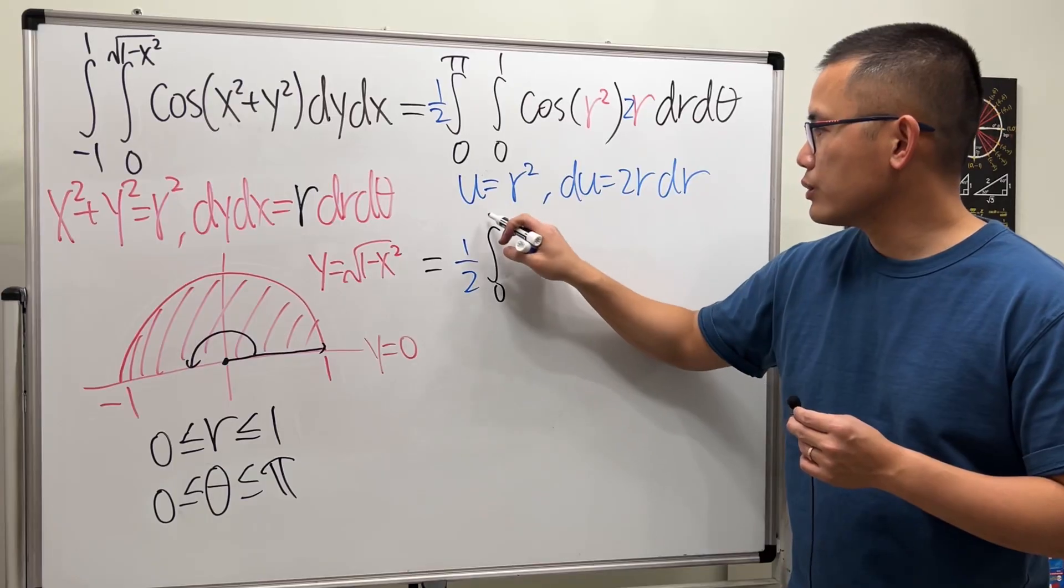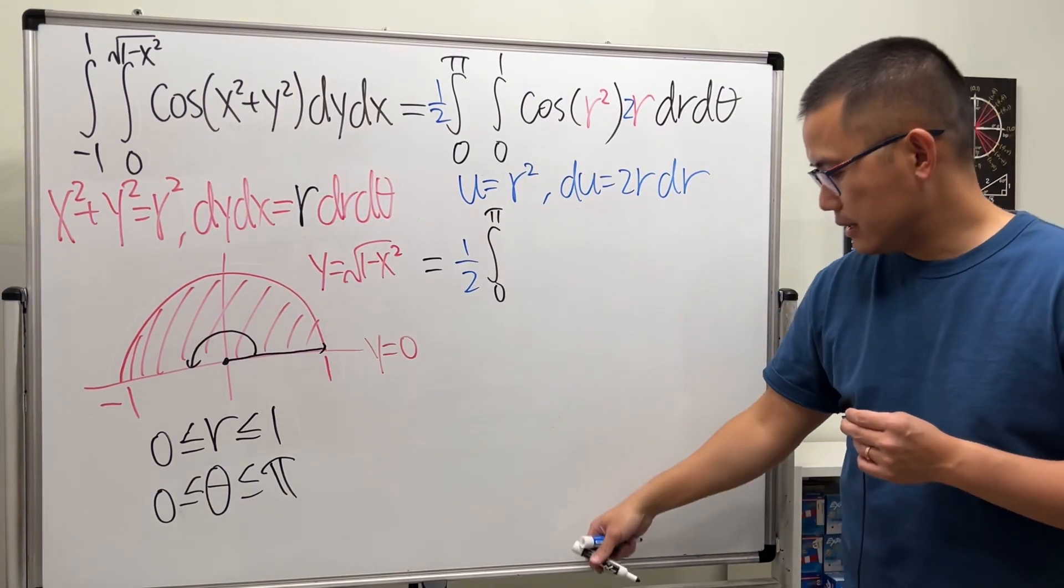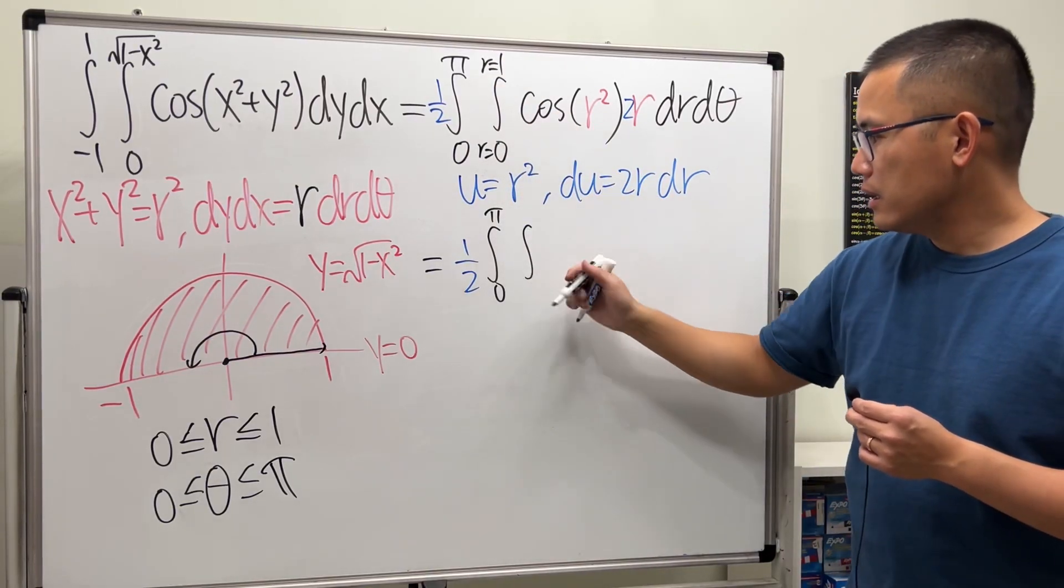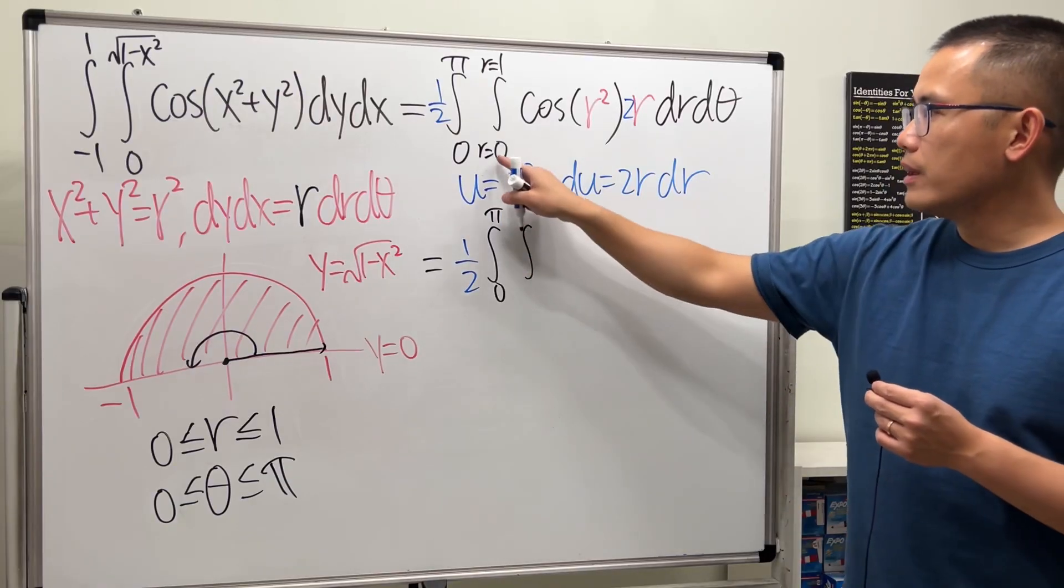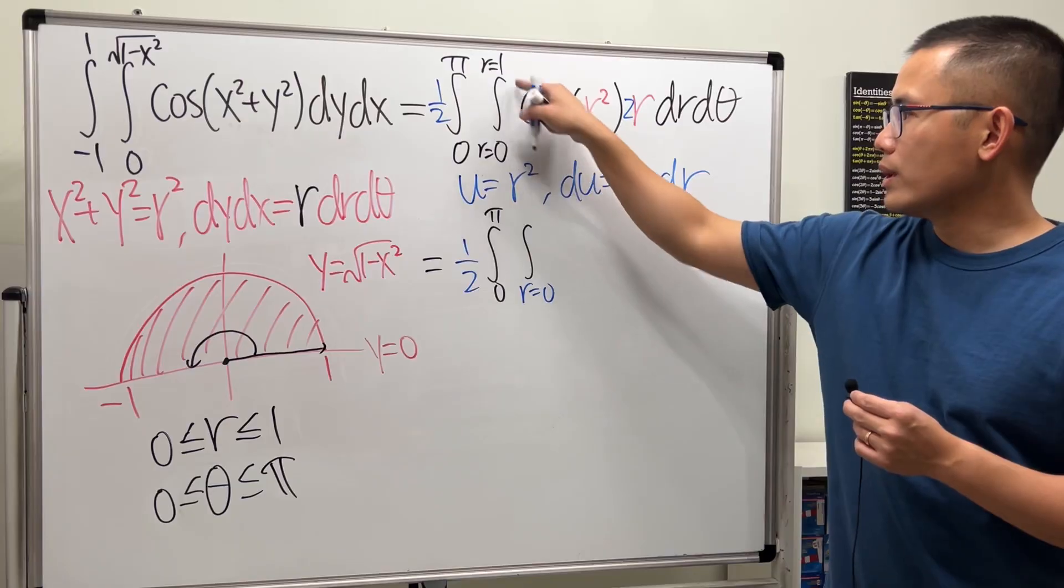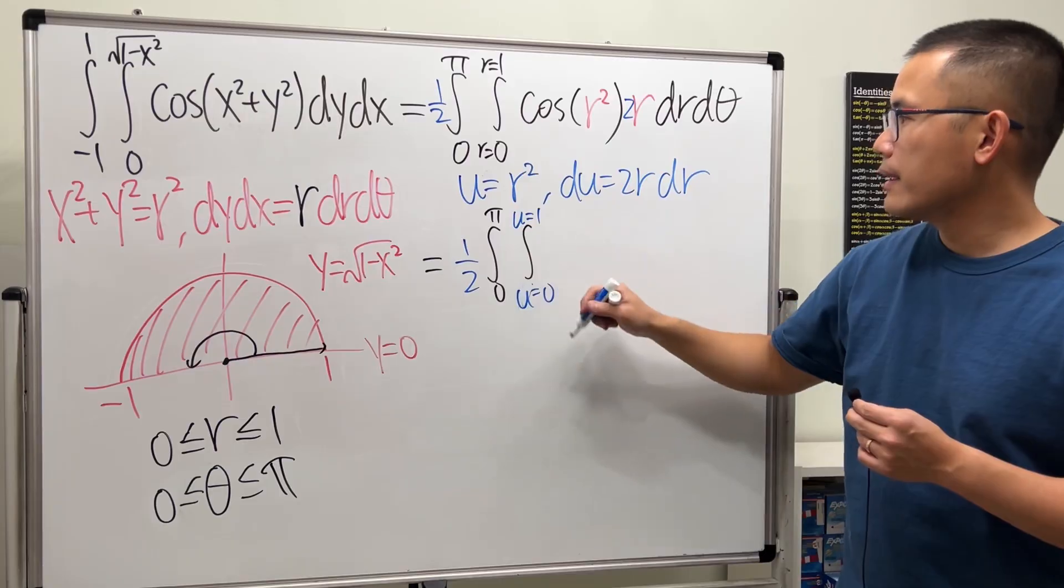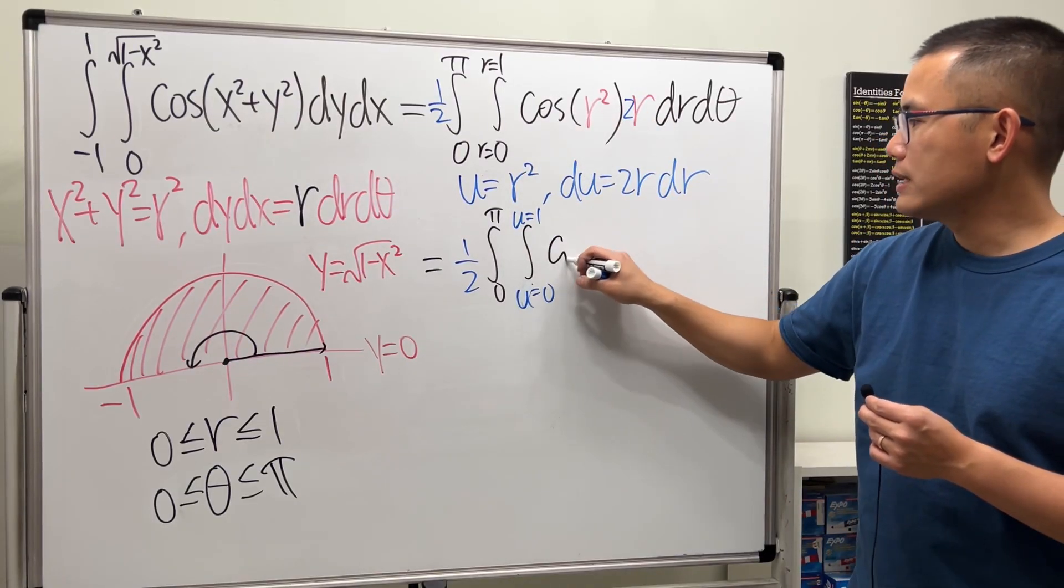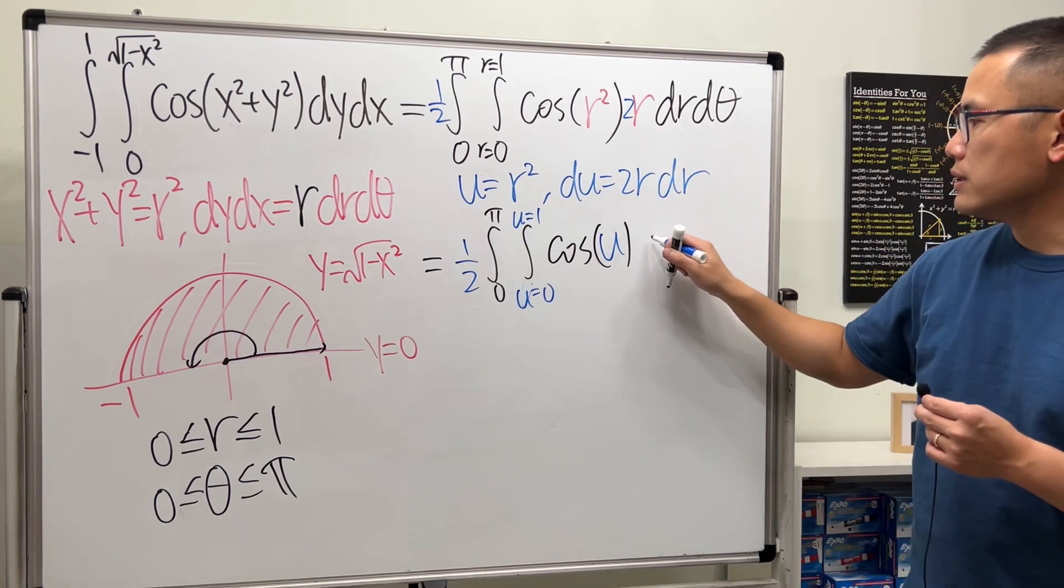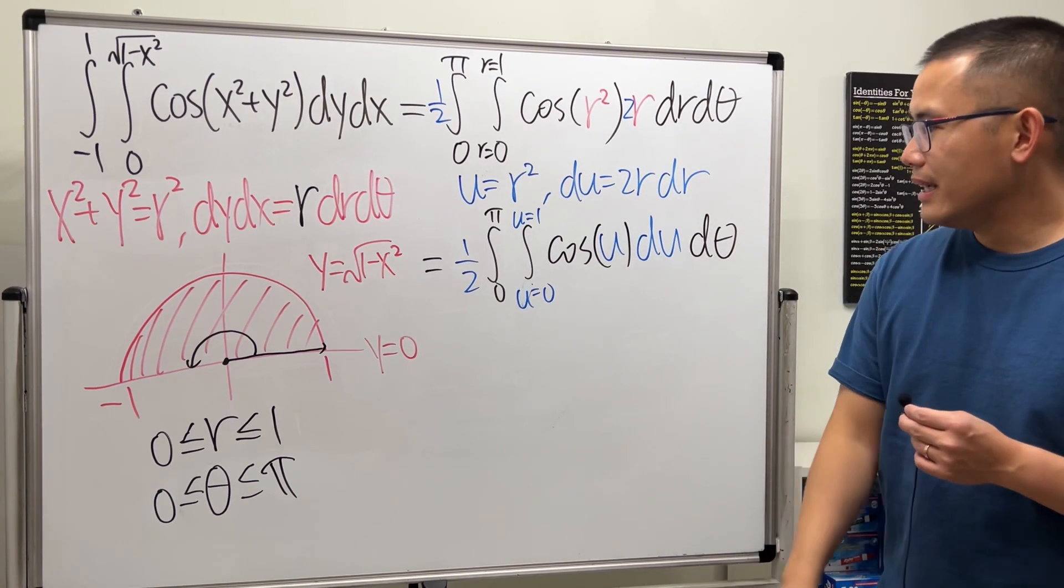We are going to have the one-half all the way in the front, integral going from 0 to π. Notice this is r going from 0 to 1. If you change that to u, when you put 0 in here, 0 squared is 0, and 1 squared is 1, so u goes from 0 to 1 as well. Then here we just have cosine of u, and then this portion is just du, and then we have dθ.